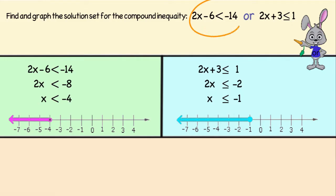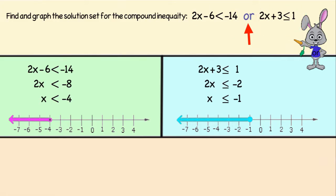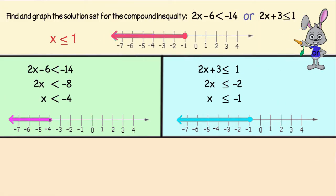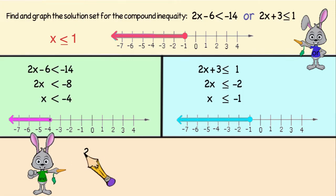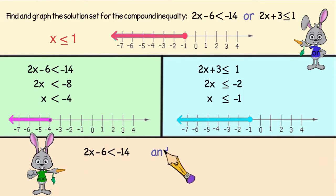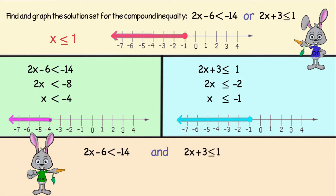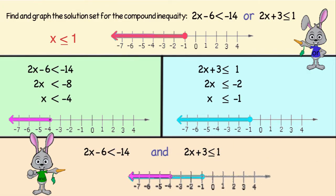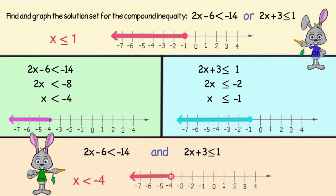The problem says that either this inequality or the other needs to be true, so we will combine these two graphs to get our solution. What if the problem had said 'and' instead of 'or'? Well in that case our solution would have to make both inequalities true, so the solution would have to be the overlap of the two graphs, or x is less than negative 4.